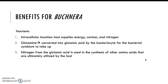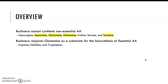The benefits for Buchnera: since it is intracellular, the host supplies the energy, carbon, and nitrogen — and that nitrogen is essential because it's needed to produce those essential amino acids. Glutamine is also important because it gets converted into glutamic acid by the bacteriosome, which then takes it up to synthesize essential amino acids. In brief, Buchnera cannot synthesize non-essential amino acids — proline, serine, tyrosine, asparagine, and aspartate — and requires glutamine as a substrate for the biosynthesis of essential amino acids such as arginine, histidine, and tryptophan.